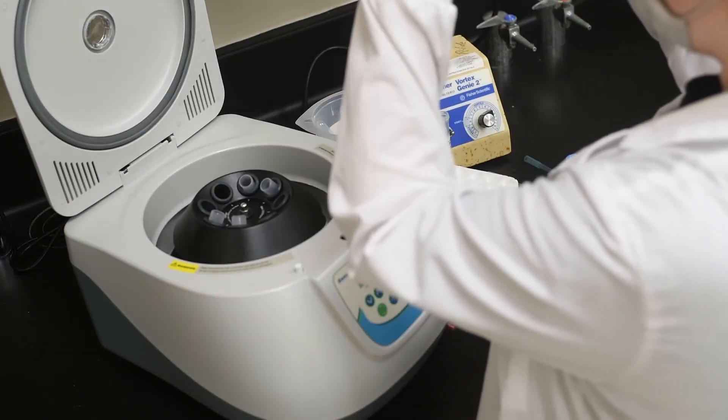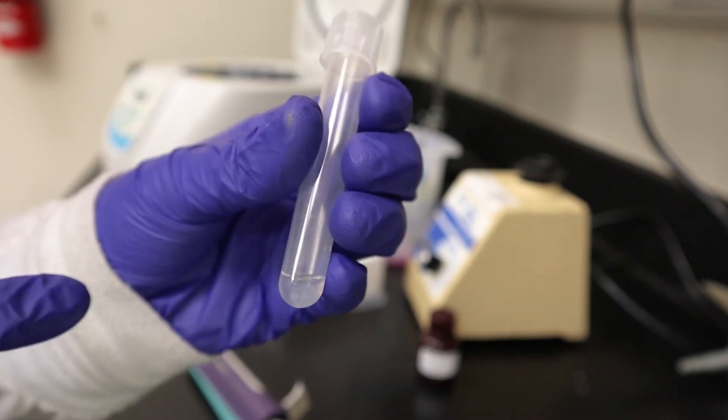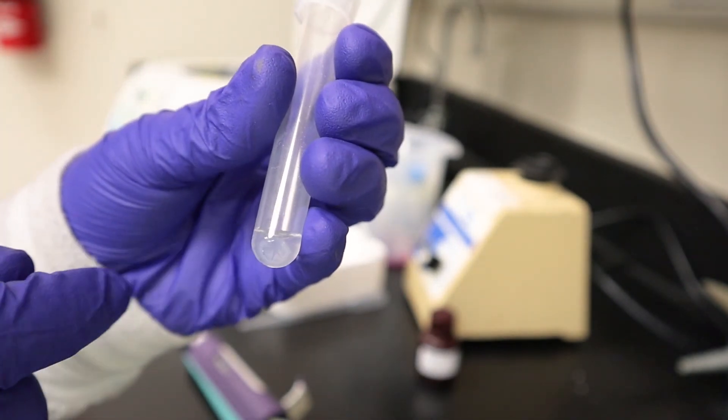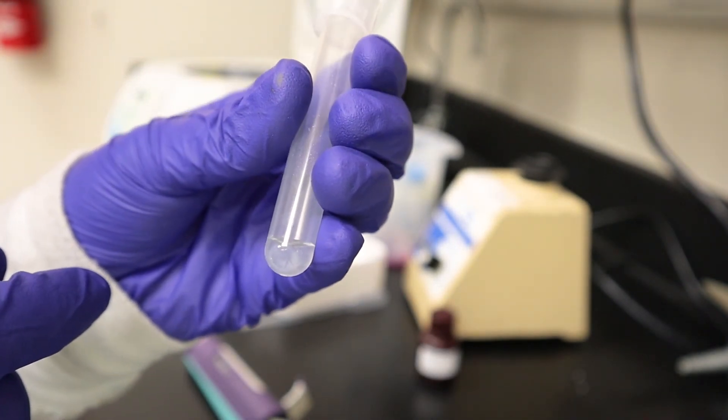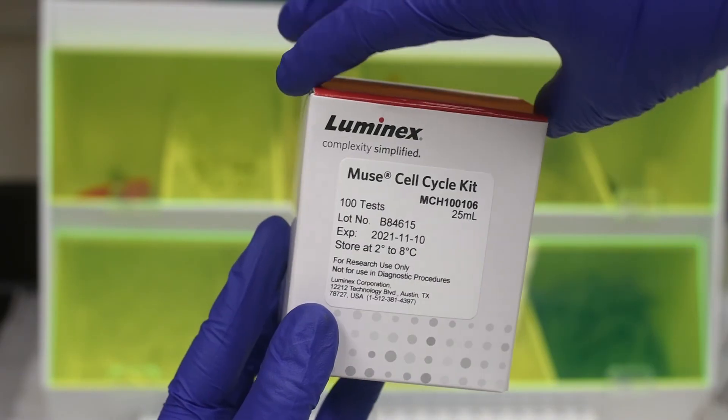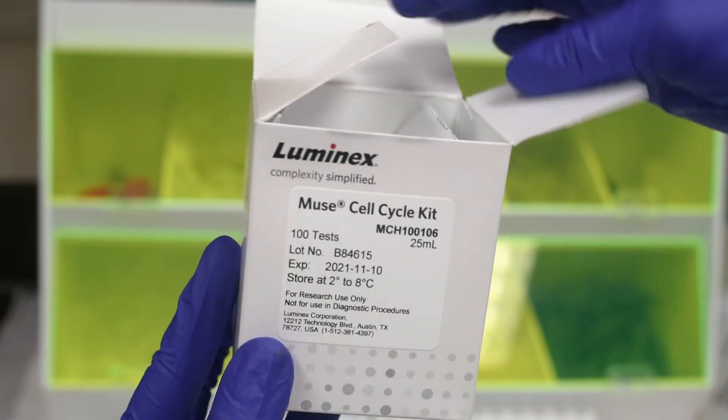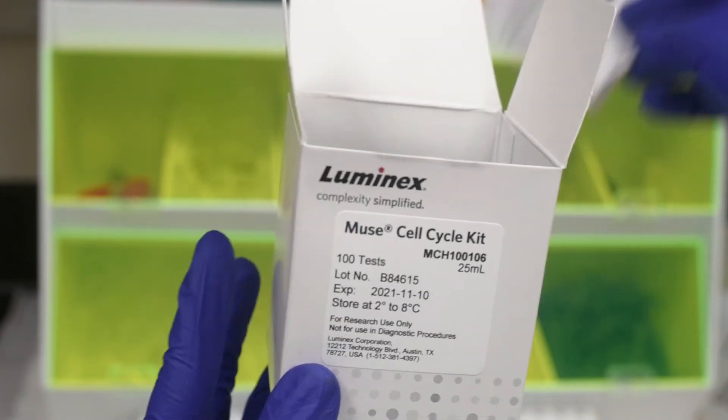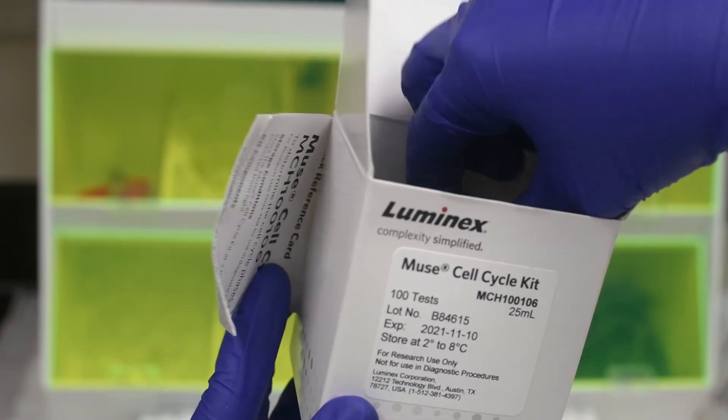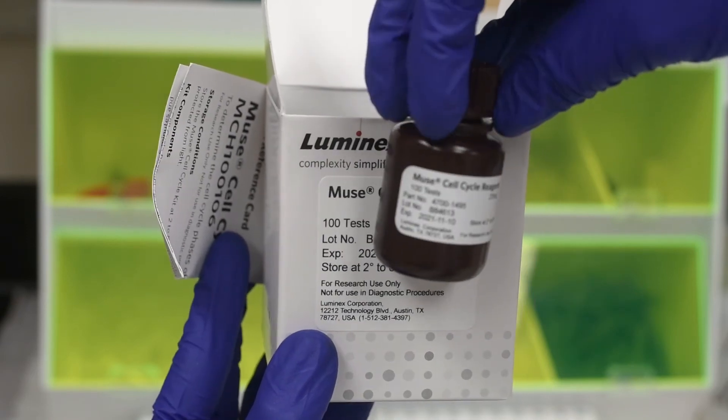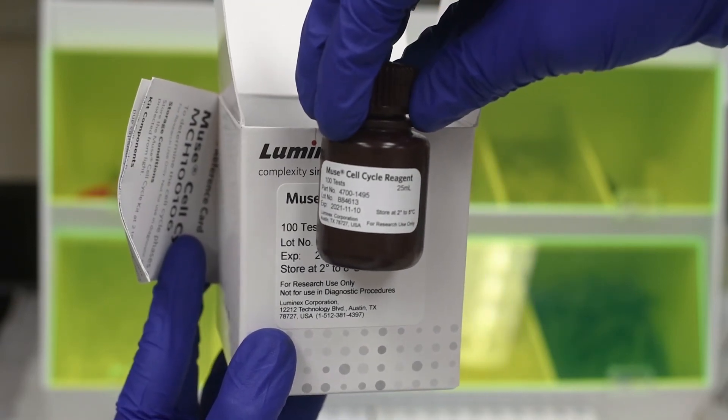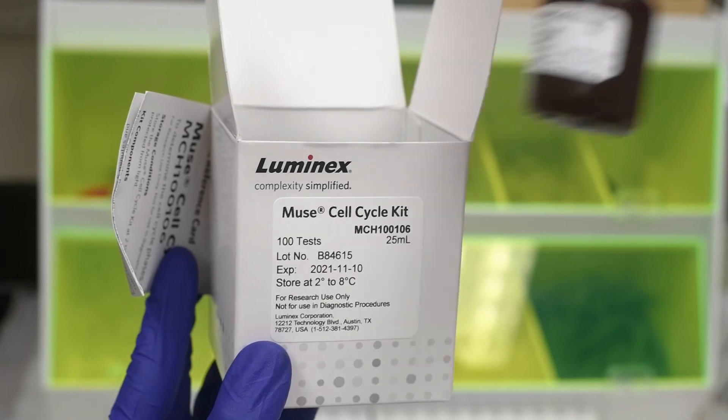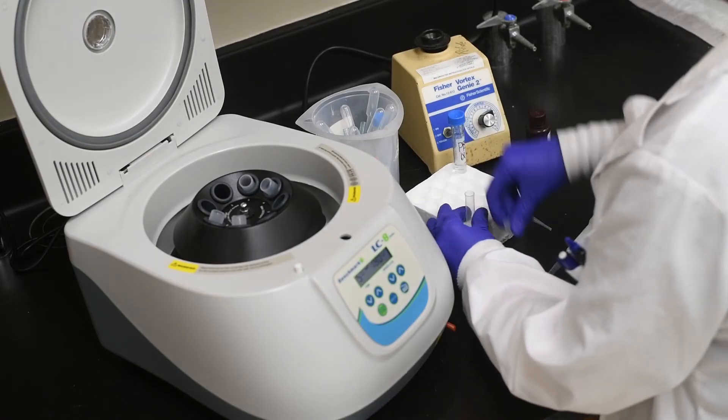Once centrifugation was complete, I carefully removed the supernatant without disturbing the pellet. The reagent used in this experiment contains a proprietary blend of propidium iodide and RNase A that fluoresces chromosomal DNA. The amount of DNA in resting cells differs from those undergoing replication, and the intensity of the stain can be used to determine what phase of the cell cycle each cell is in.